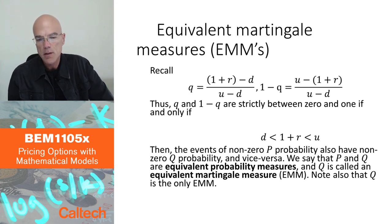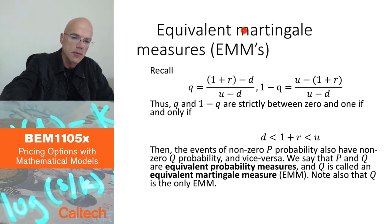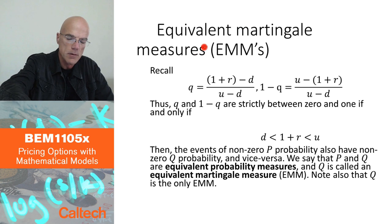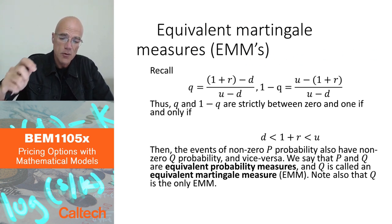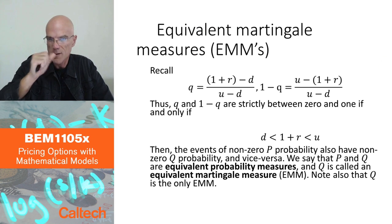There is another piece of terminology here that I want to introduce: EMMs, or Equivalent Martingale Measures. Those are going to be martingale probabilities which are also equivalent. What does it mean, equivalent?